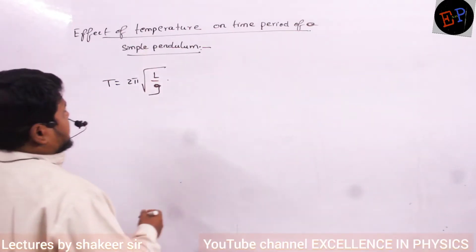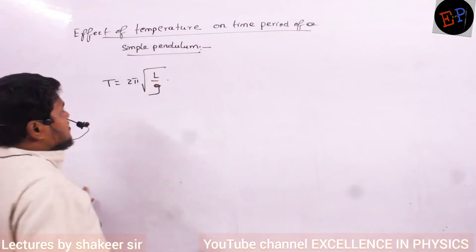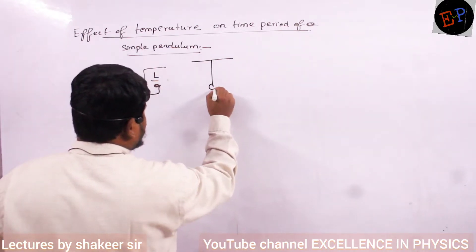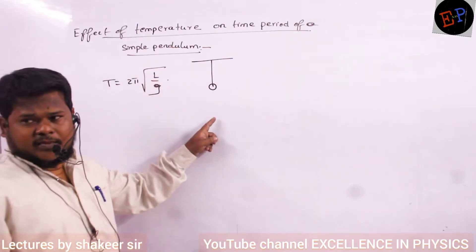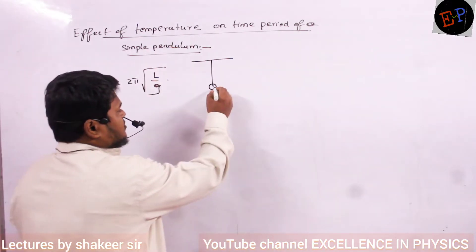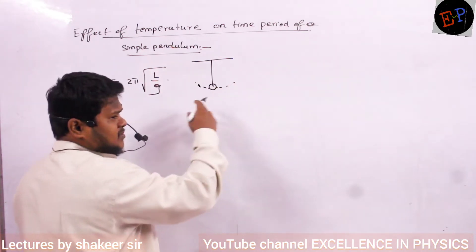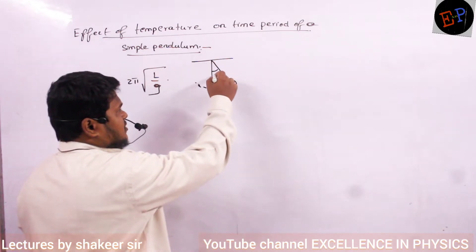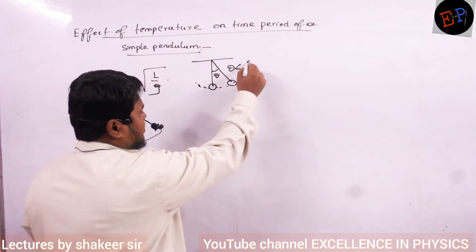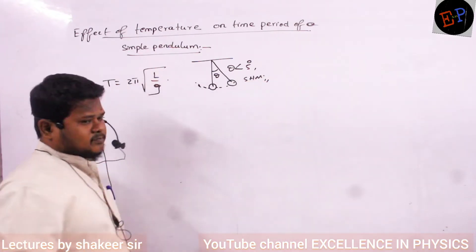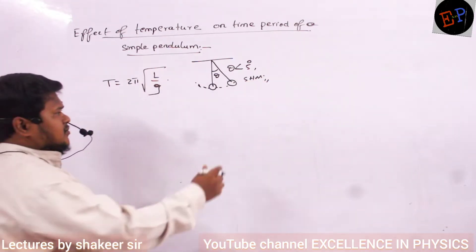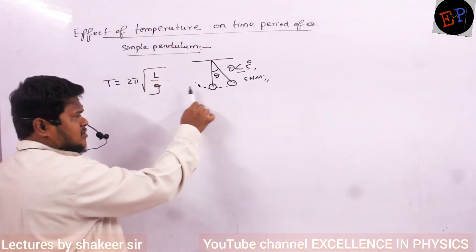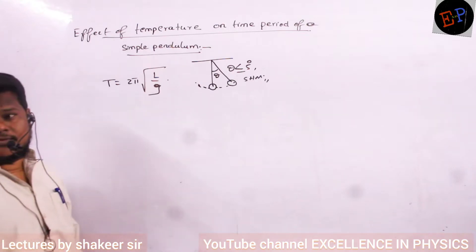Effect of temperature on time period of a simple pendulum. A simple pendulum has a thread connected to a bar. If I oscillate this, it starts performing simple harmonic motion. If the angle of motion theta is less than or equal to 5 degrees, then we can call it simple harmonic motion. Time taken for one oscillation is called time period.